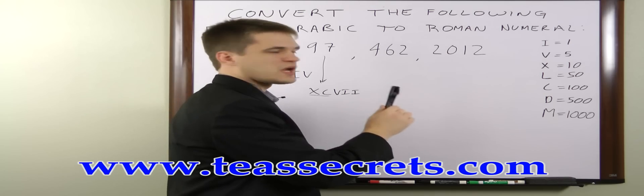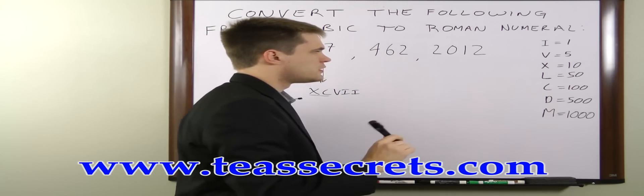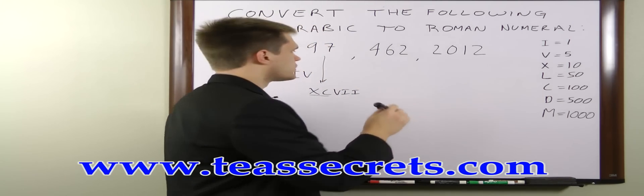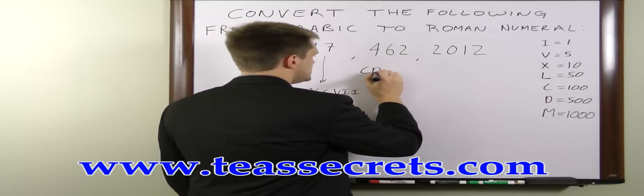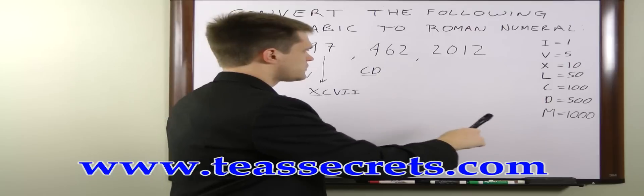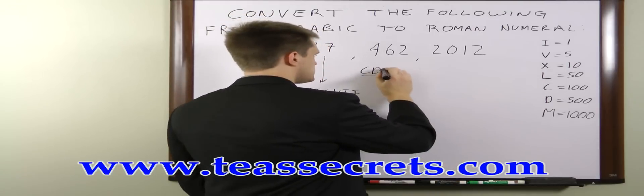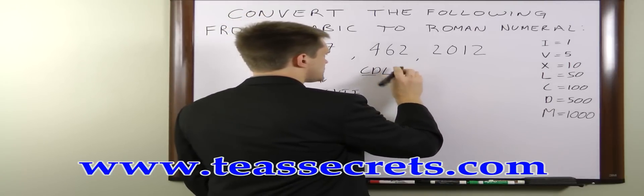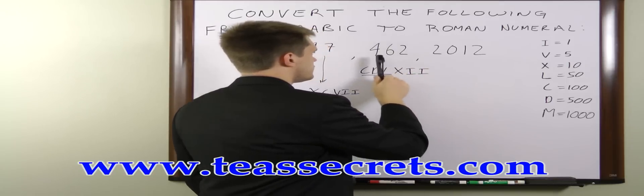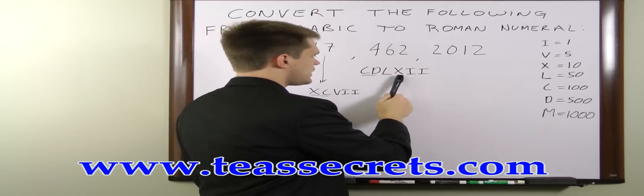For 462, we have a 4 in the hundreds column. So we can subtract the 100 from the 500. We write that as CD. So that's 400. 60 we write as LX. So CDLX. And then 2 is just 2 I's. So 462 is CDLXII.